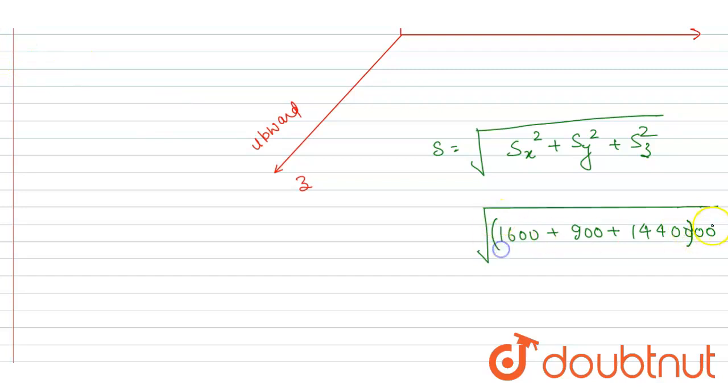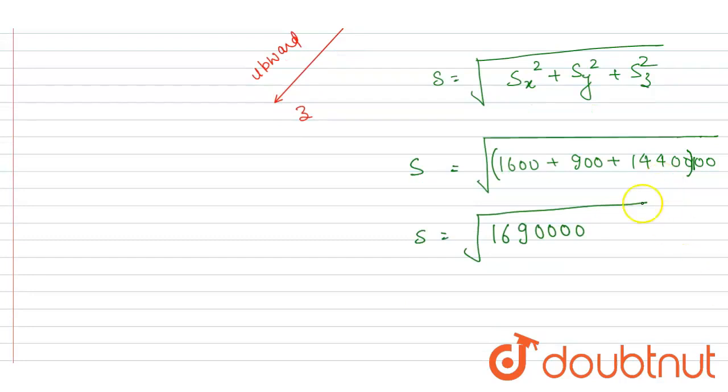So I will take 100 common here. So it will be equals to 100 times under root of 169. So it is 1300 meters and this is the answer of this question.